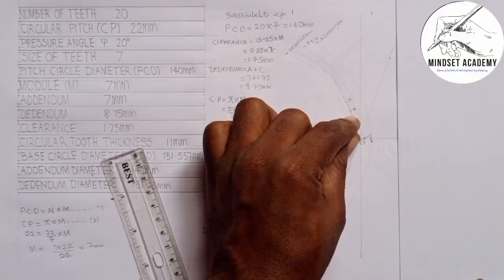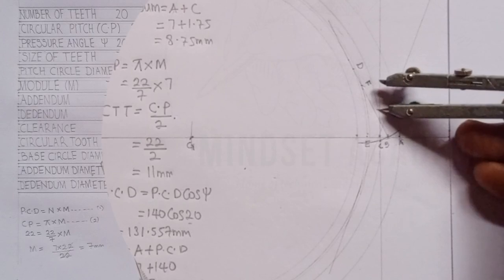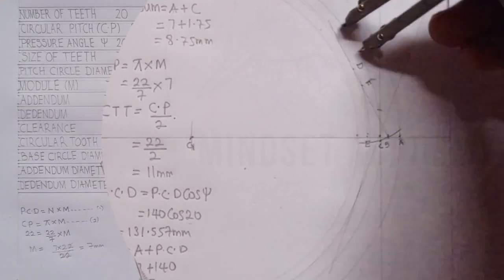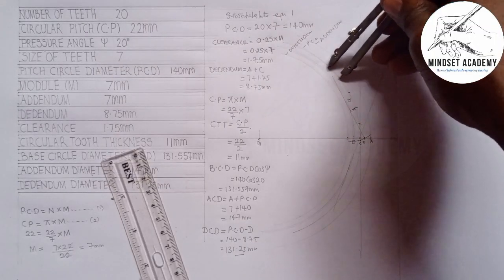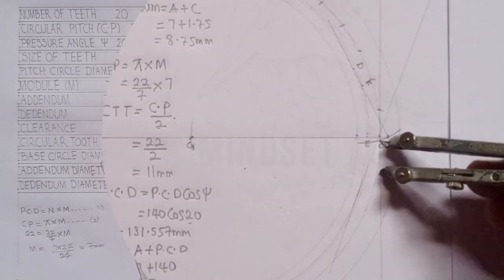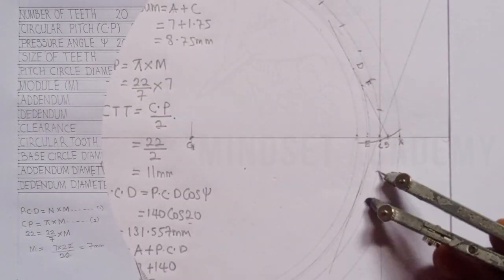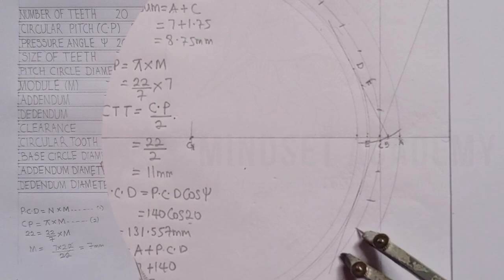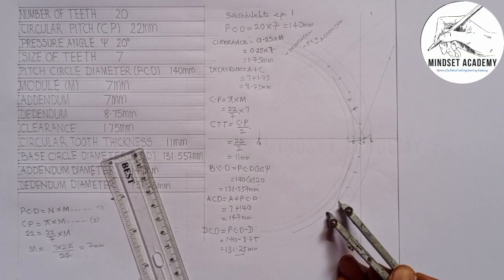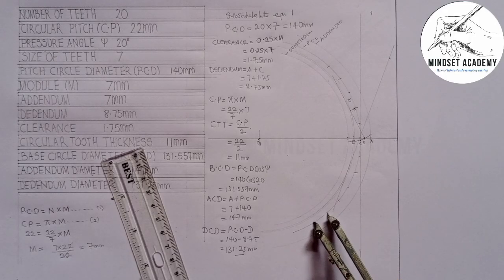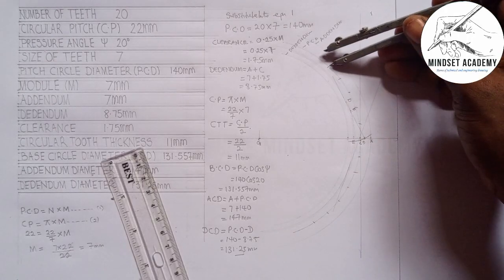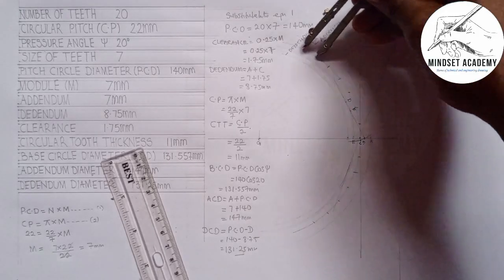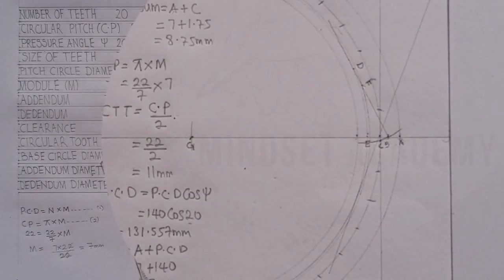Marking 11 mm intervals along the PCD from point C gives each tooth width. I repeat this process: one-two marks one tooth space, one-two marks two teeth, one-two marks three, one-two marks four, one-two marks five, one-two marks six, and one-two marks seven teeth total, as required.